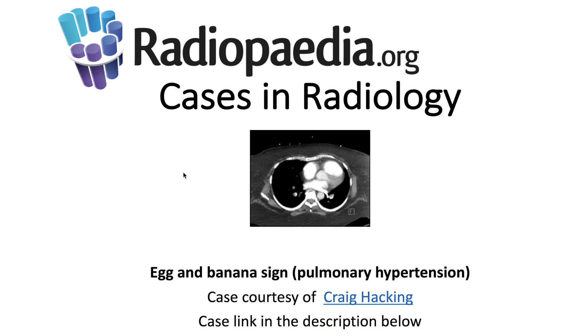I'll be presenting today's radiopedia.org case in radiology: the egg and banana sign in pulmonary hypertension. Case courtesy is demonstrated here, and the case link is in the description below.